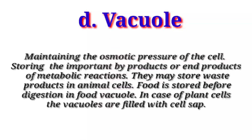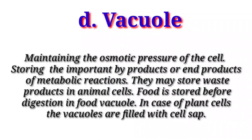D. Vacuole: Vacuoles maintain the osmotic pressure of the cell, storing important byproducts or end products of metabolic reactions. They may store waste products in animal cells. Food is stored before digestion in food vacuoles. In the case of plant cells, the vacuoles are filled with cell sap.